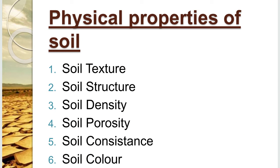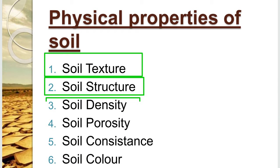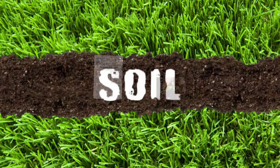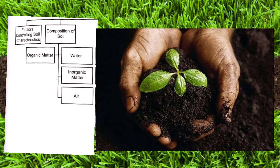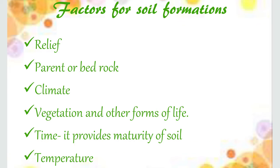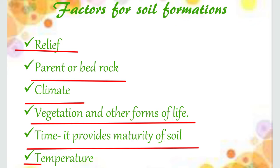Physical properties of soil include soil texture, soil structure, soil density, porosity, consistence, and soil color. Then we will discuss the composition of soil, which includes organic matter, inorganic matter, water, and air. Then we will discuss factors responsible for soil formation, like relief, parent rock or bedrock, climate, vegetation, other forms of life, time, and temperature.